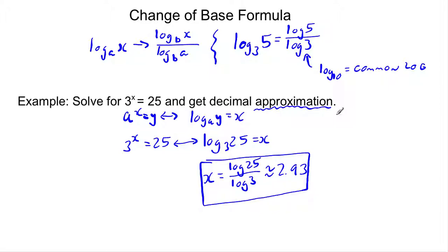Note, anytime we have a decimal, it is an approximation. Well, whenever we round a decimal, it's going to be an approximation. So because I rounded this off, I put this about equal to, this approximation symbol.